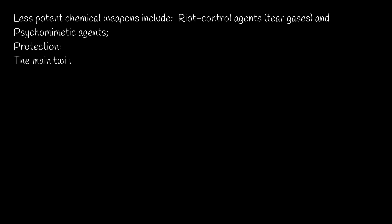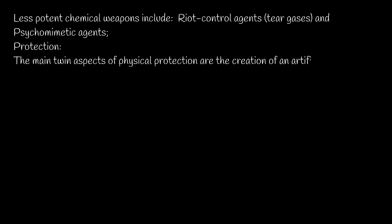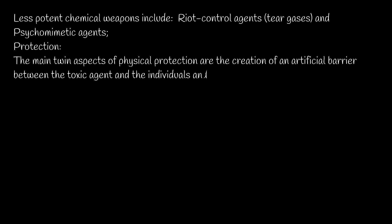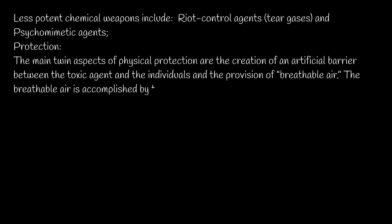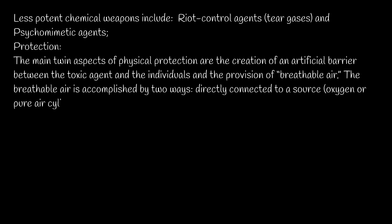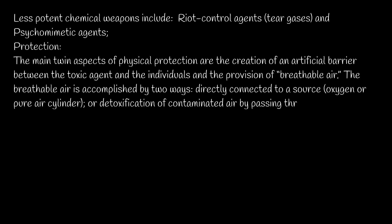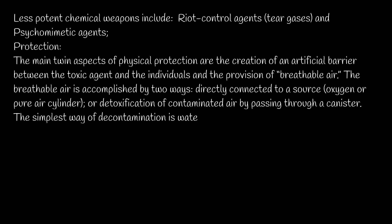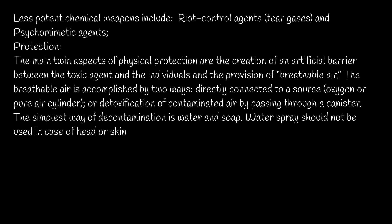Protection: the main aspects of physical protection are the creation of an artificial barrier between the toxic agent and the individual, and the provision of breathable air. Breathable air is accomplished in two ways: directly connected to a source such as an oxygen or pure air cylinder, or by detoxification of contaminated air by passing it through a canister. Full face protective masks provide good protection for both the respiratory tract and the eyes, and should have a good field of vision and speech transmission, preferably with a microphone.